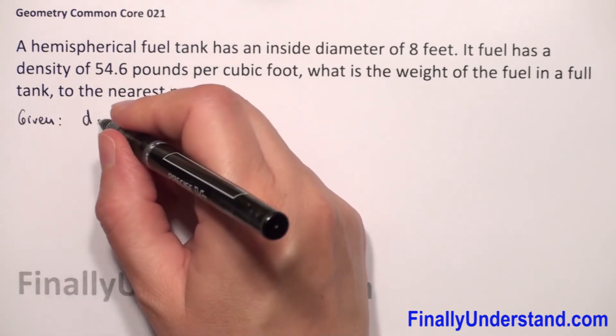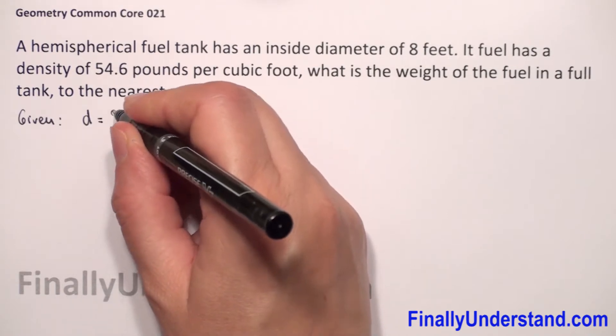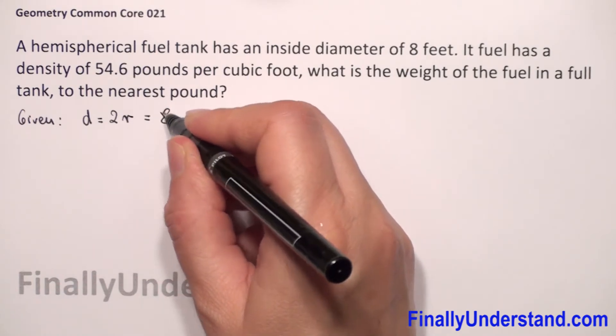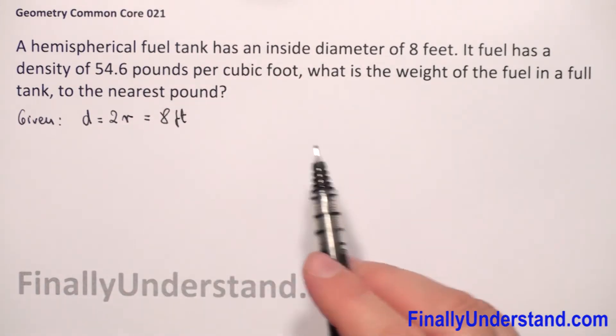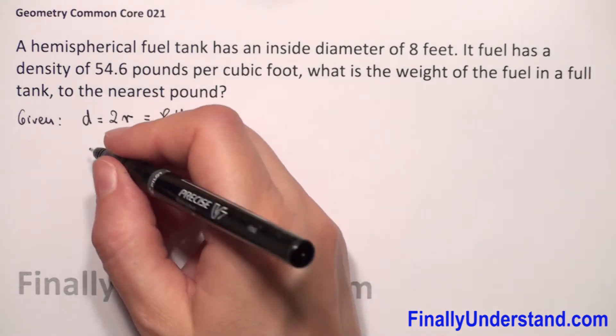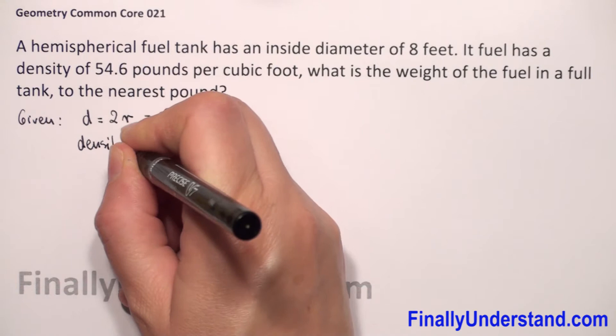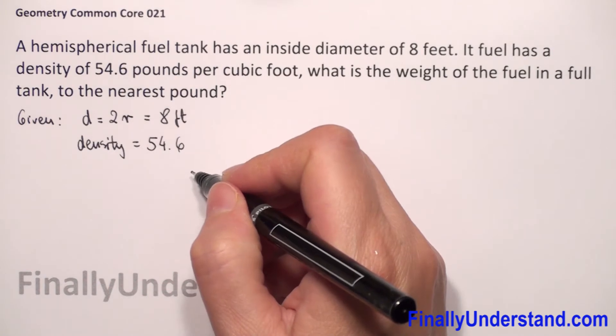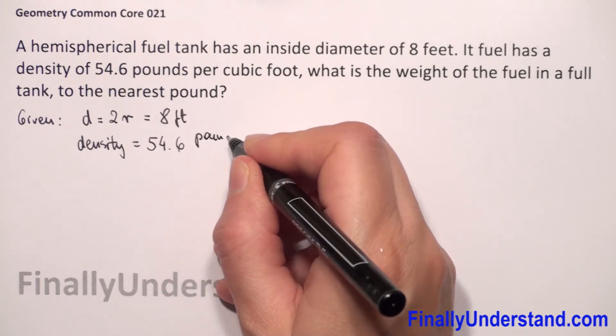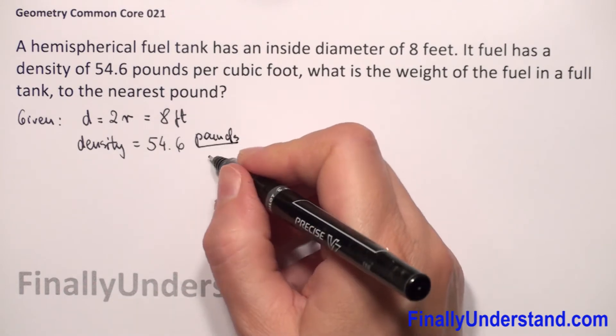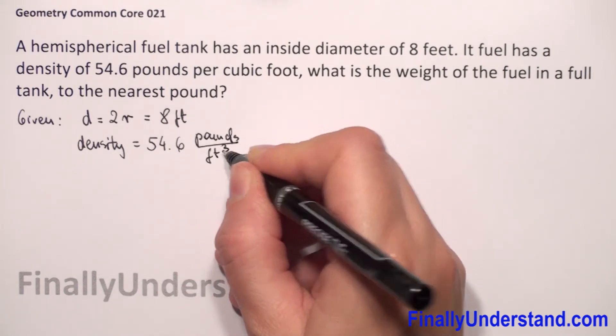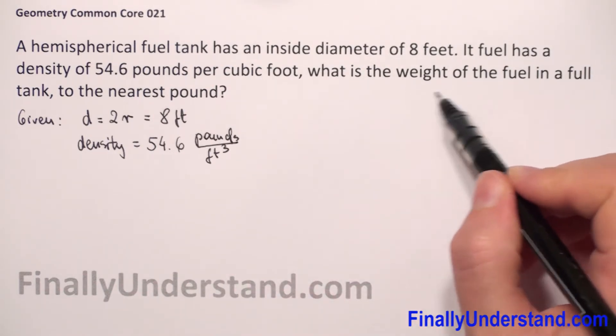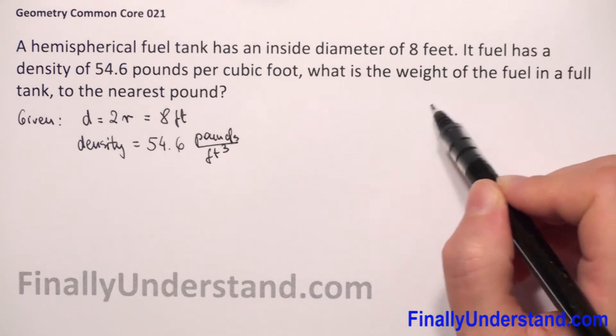We're given that diameter D equals 2 radius, so 2R equals 8 feet. We have the density which is 54.6 pounds per cubic foot, and we need to find the weight of the fuel in the full tank.